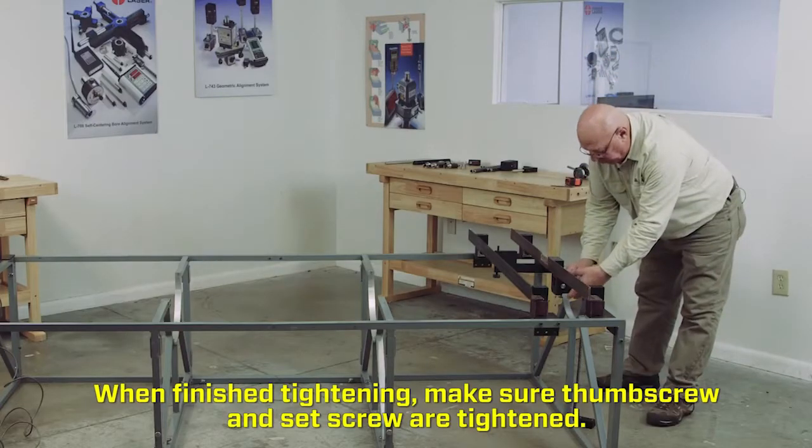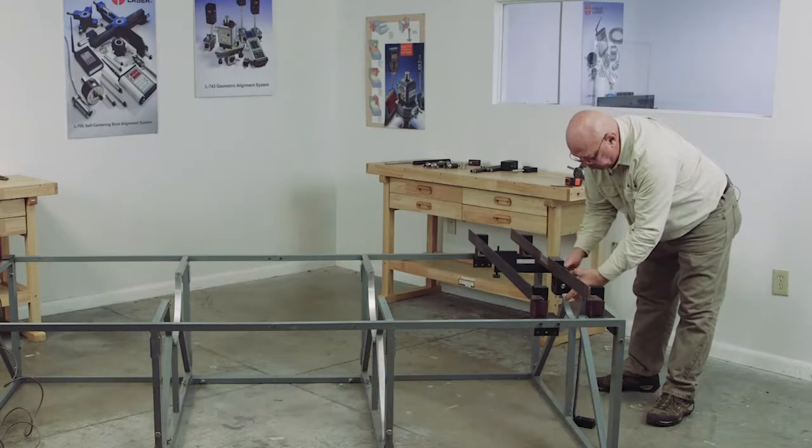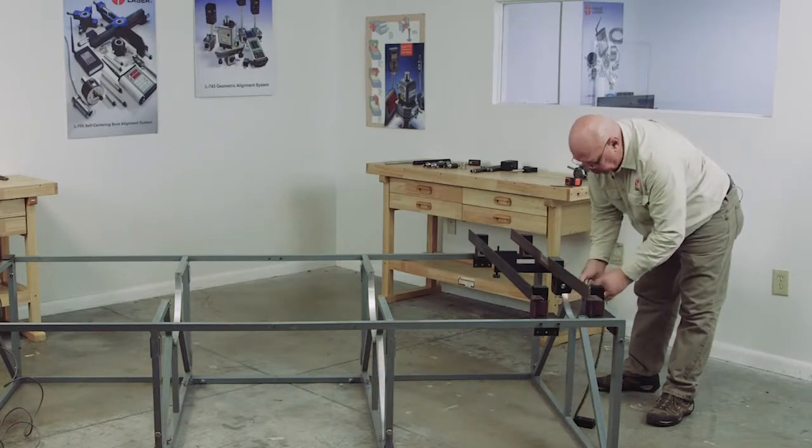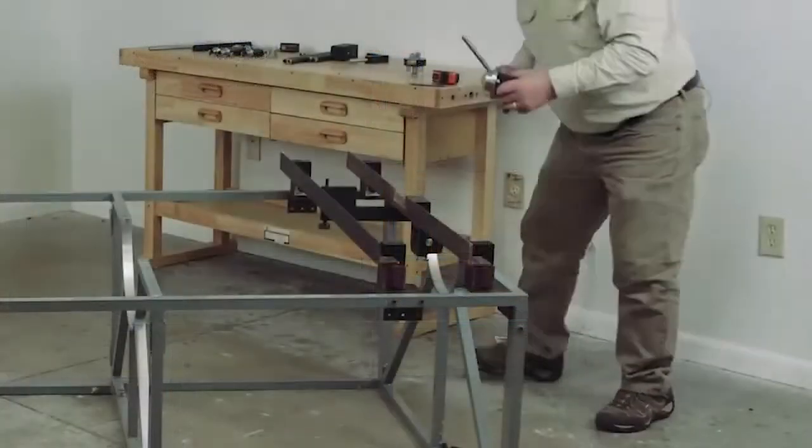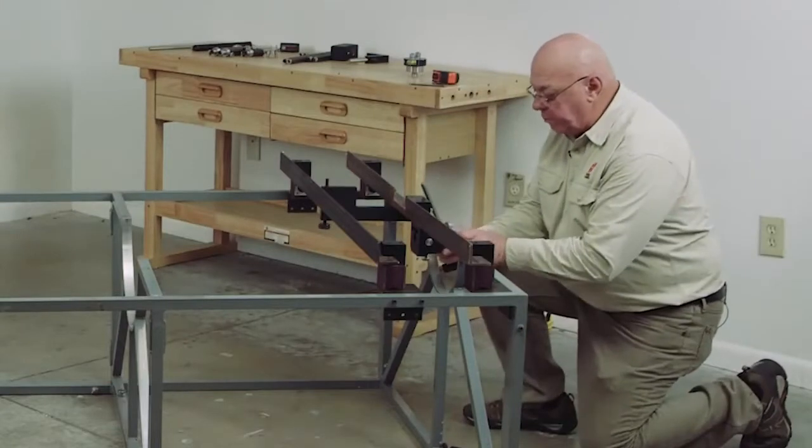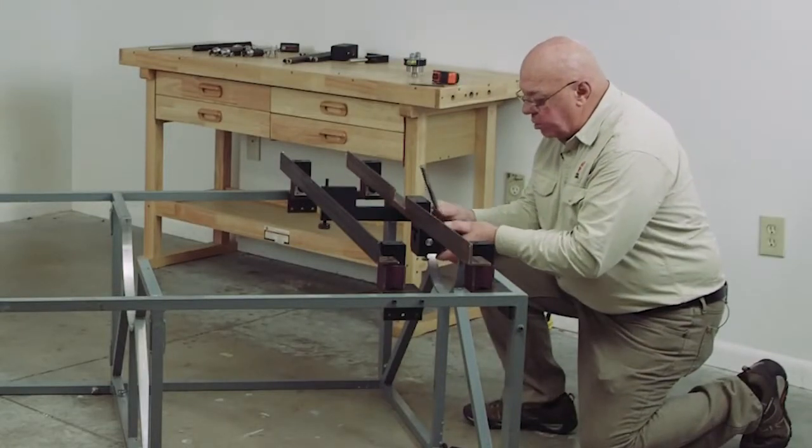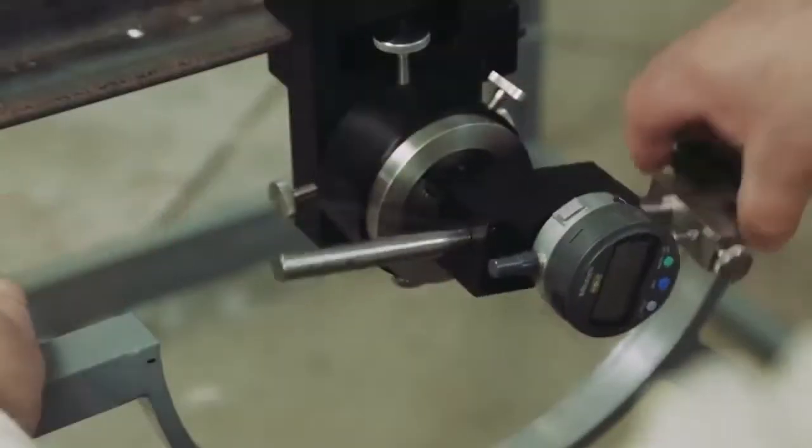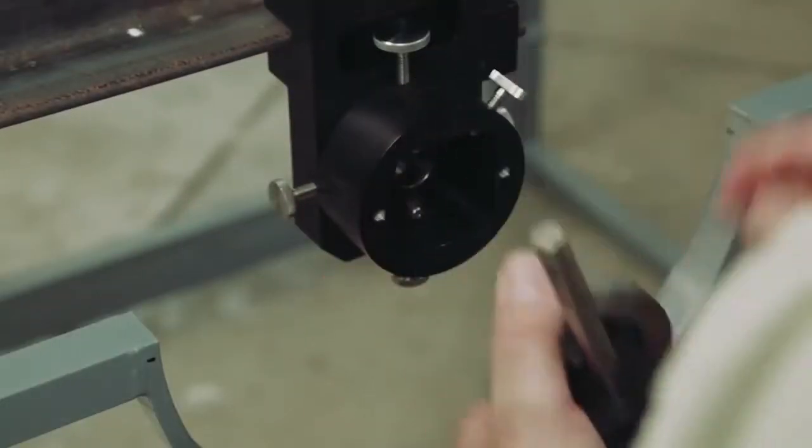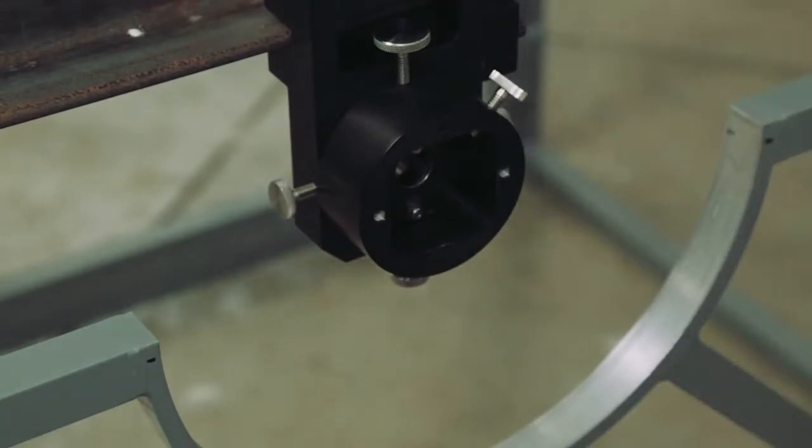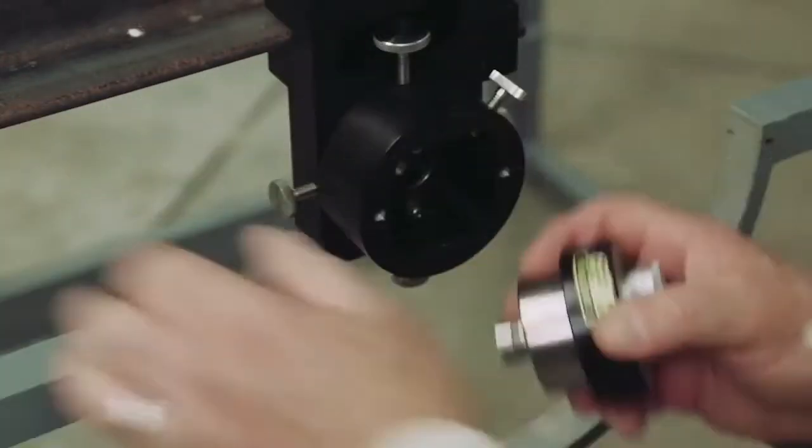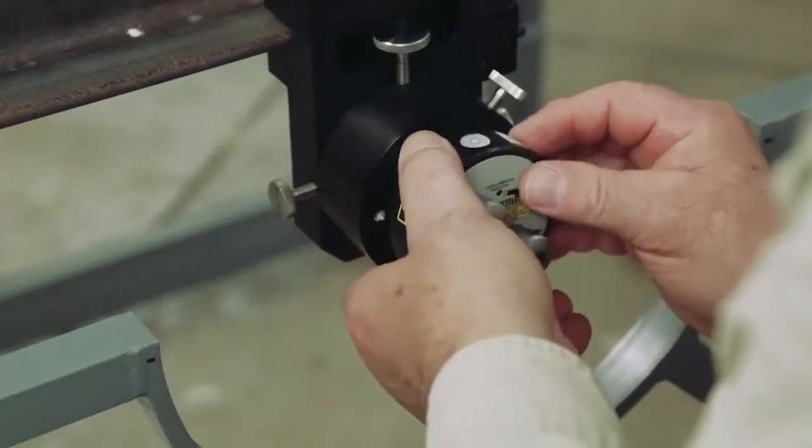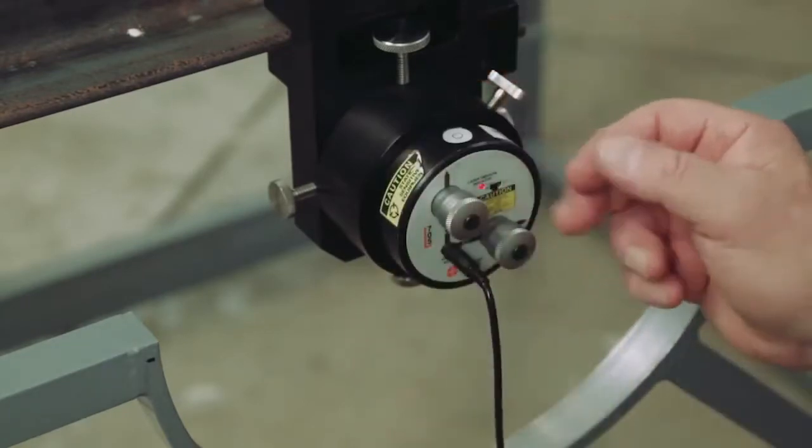So now I'm going to take the 706 out of here, turn it off and take it out. And I'm going to put the sweep unit in. And I'm going to sweep this just like I did the target holder. So now I have this swept in. I'm going to remove the sweep unit. I'm going to reinsert the 706. Turn it on.